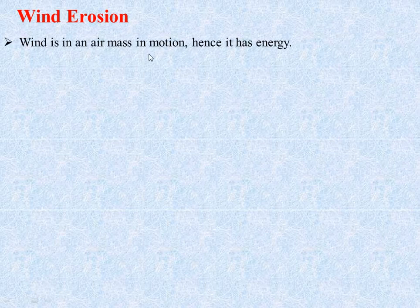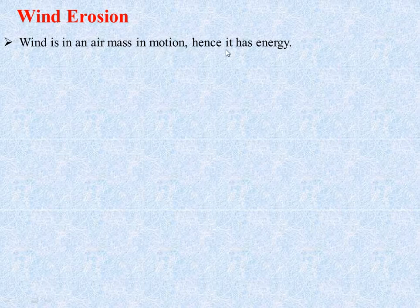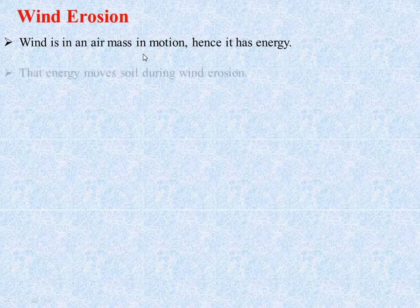Because this air has mass and velocity, it acquires energy and this energy moves the soil during the process of wind erosion.